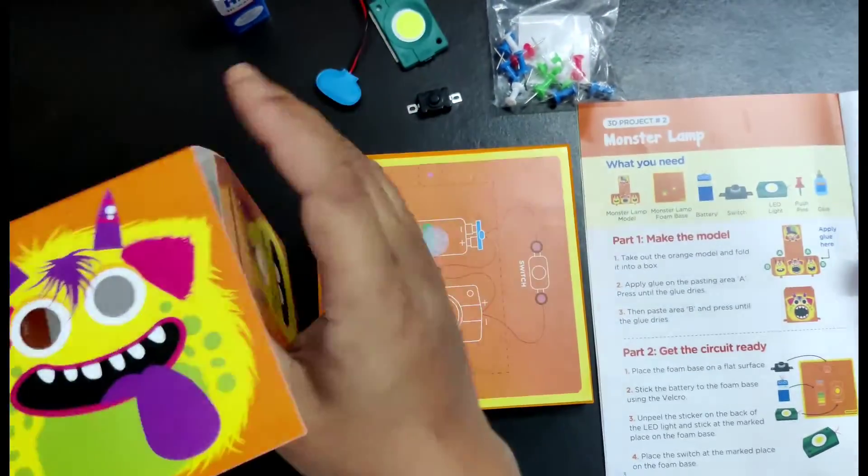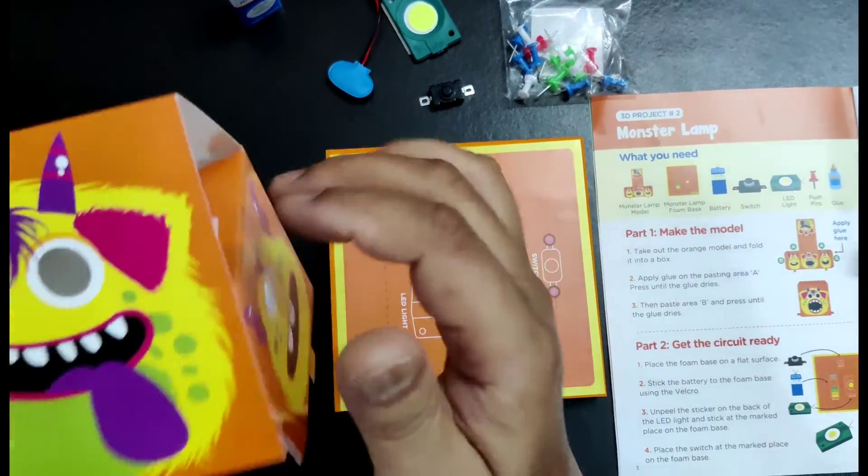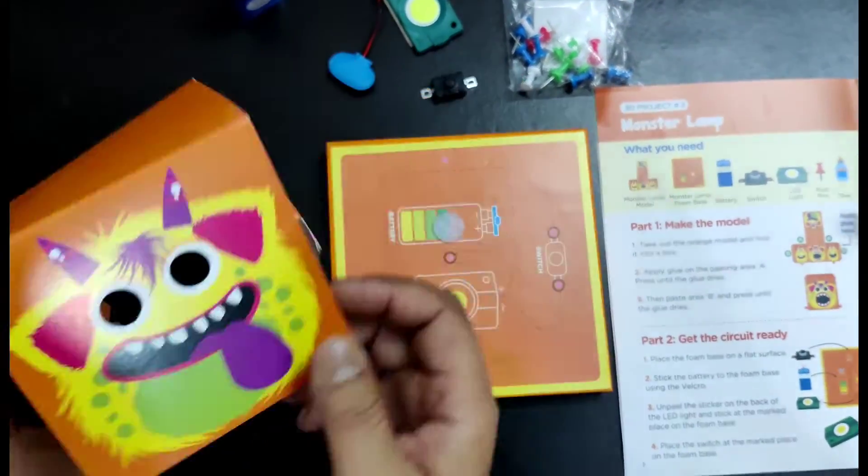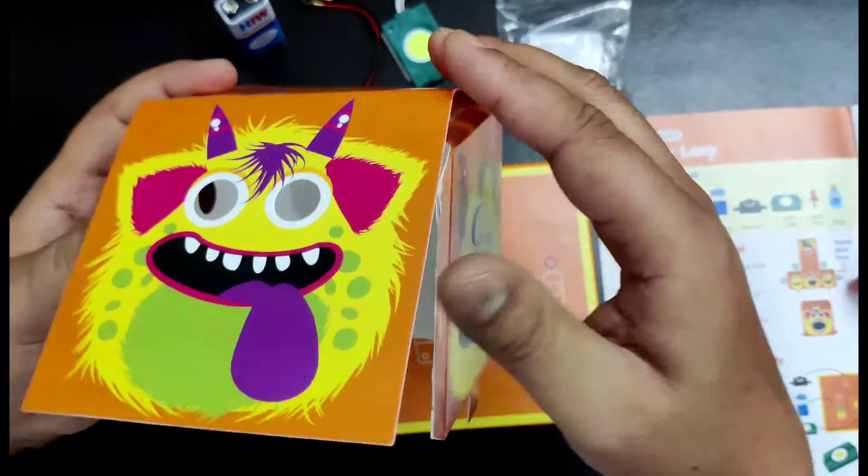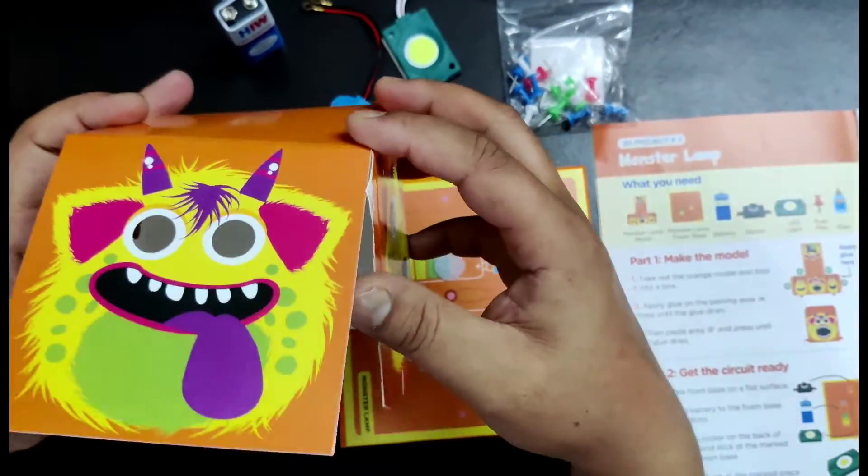Put glue on here. Okay, to do it in this way, just paste here. So over here we need to paste the glue and we have to make it like a... no, forget, paste here, paste here.